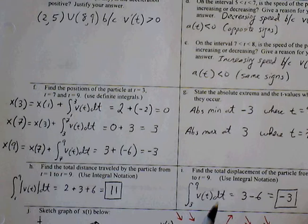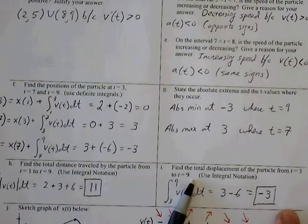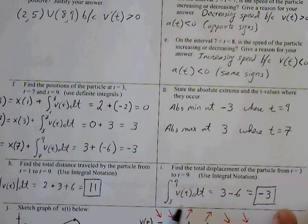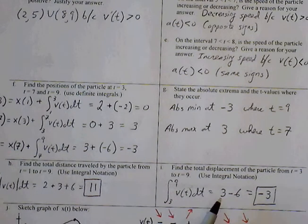To find the total displacement, we have to keep track of the negatives. We're only going to go from 3 to 9. So positive 3 plus negative 6 is negative 3.